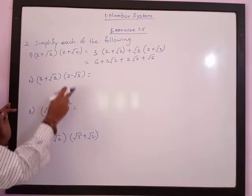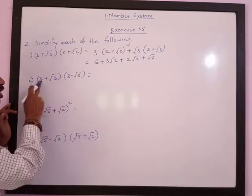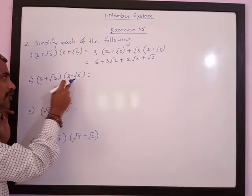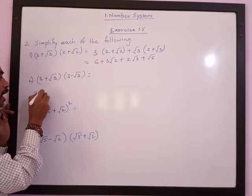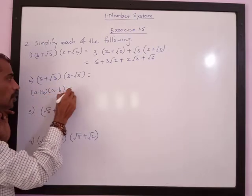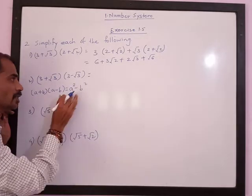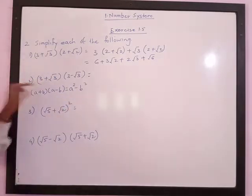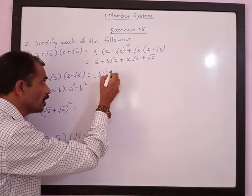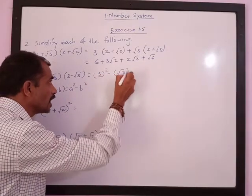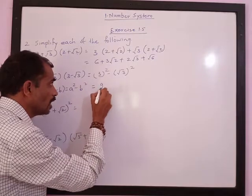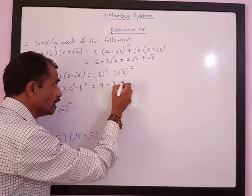Next is (3 plus root 3) multiplied by (3 minus root 3). The first numbers are the same and the second numbers are the same, only the signs are different. So we use the identity (a plus b)(a minus b) equals a squared minus b squared. This gives 3 squared minus root 3 squared, which equals 9 minus 3, and the answer is 6.